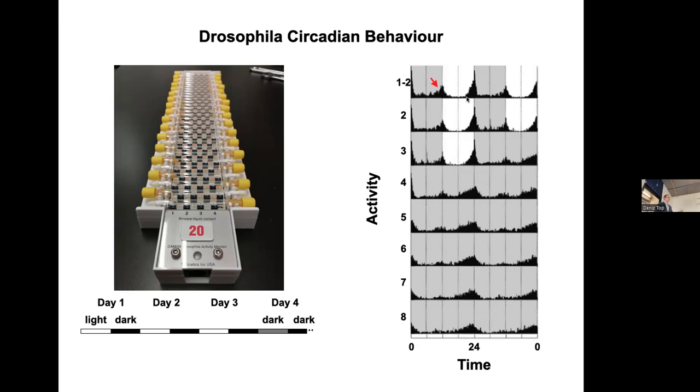You will notice that when we turn the lights off, these peaks of activity remain at almost exactly the same time. The endogenous clock is not exactly 24 hours, it's about 23.6 hours. The other thing you will notice is that the morning activity peak starts to disappear, but the evening activity peak persists.